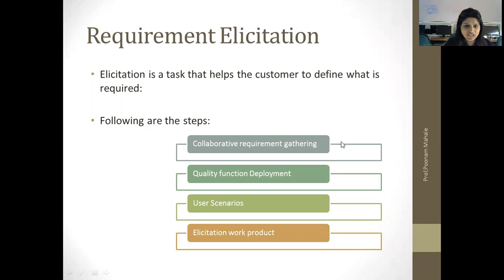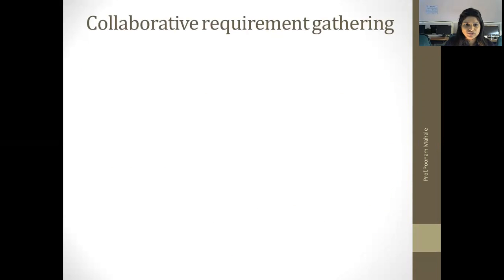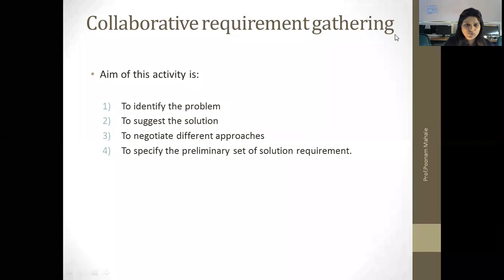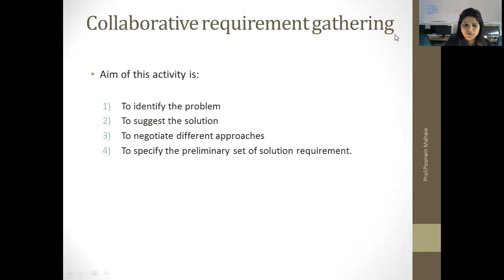Let's start with the first step — collaborative requirement gathering. Collaboration means working together. There are a number of people that work together for understanding the requirement from the customer. The aim of these activities is to identify the problem — exactly what the customer wants. Gathering the requirement is a team-oriented activity. A manager, software developer, customer, and all the stakeholders work together for collecting the requirement, and the aim is to identify the exact need of the customer.